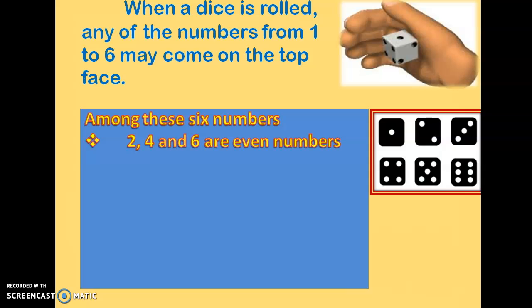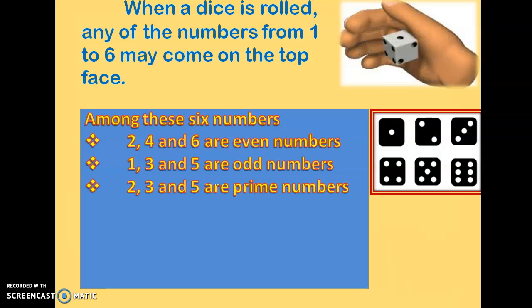There are three even numbers on a die: two, four, and six. The other three numbers — one, three, and five — are odd numbers. So there are three even numbers and three odd numbers on a die.